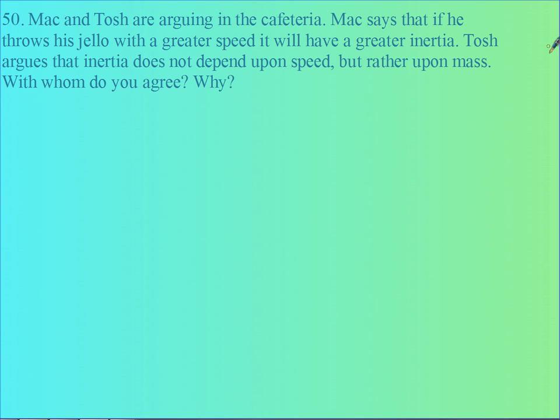Now, Mac and Tosh are arguing in a cafeteria. Mac says if he throws jello with a greater speed, it will have more inertia. Tosh argues that inertia doesn't depend upon speed, but on mass. Who is correct? It turns out inertia is a property of the stuff, the mass. How much stuff is in your object determines its inertia, not the speed.